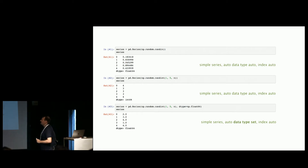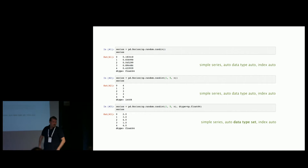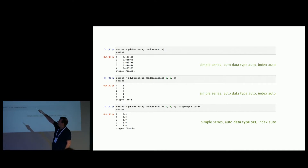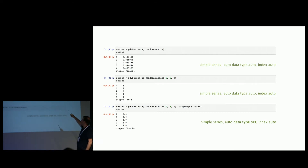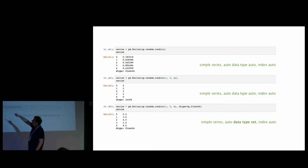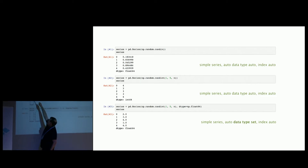Let's get more into code. We just create a random series using pd.Series and put in some random values. You'll see there's an auto data type and an automatically created index. When we plot it out, we see the index on one side and the random data on the other, and we also get the data type — float64.